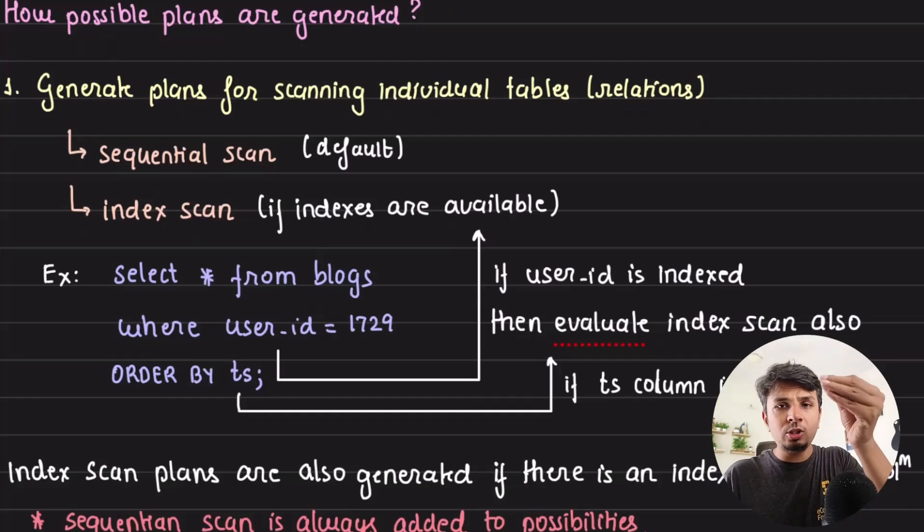Those tables would need to be scanned because you would be querying and finding rows, like select star from this table where something equals something. In such queries, the table needs to be scanned for their rows. Here we have two cases: either you do by default a sequential scan of the table, or an index scan in case the index is available.